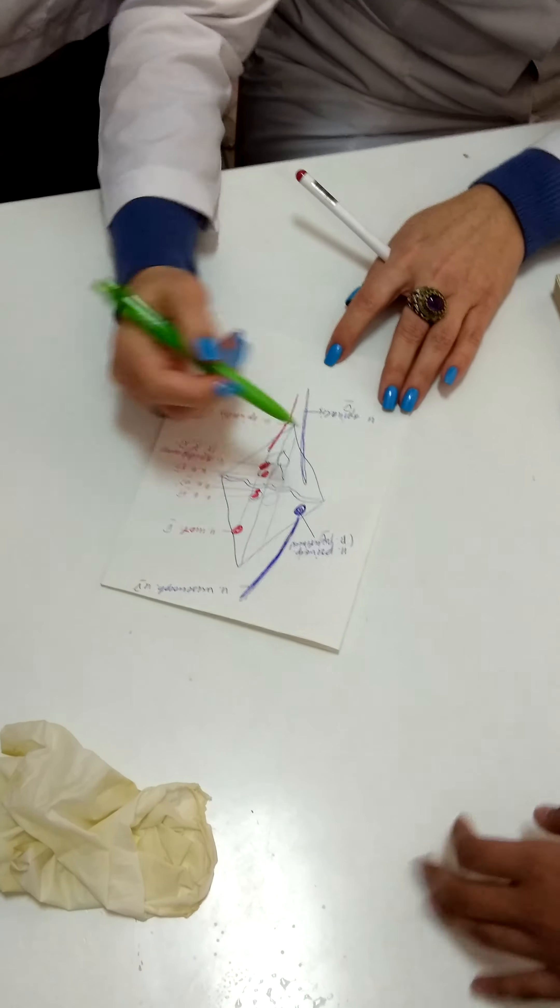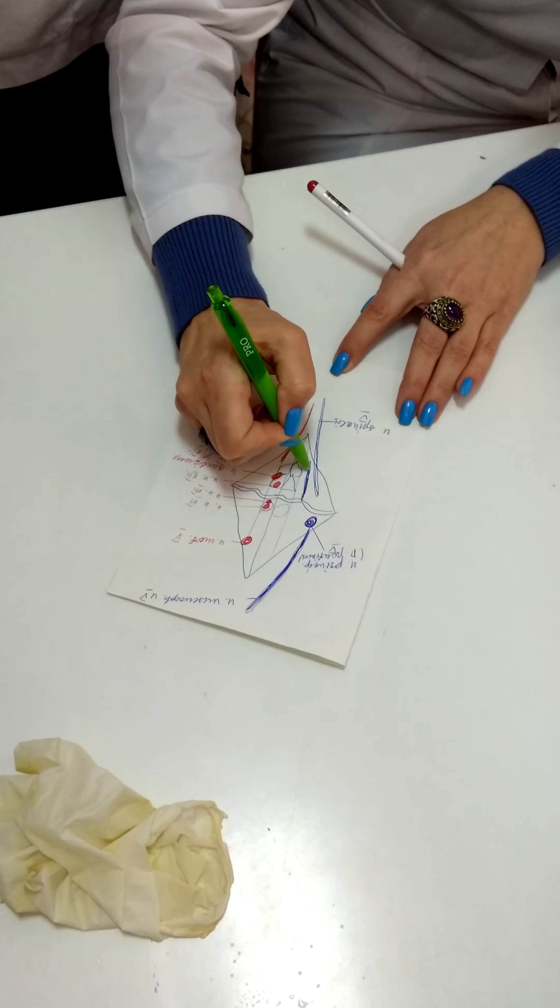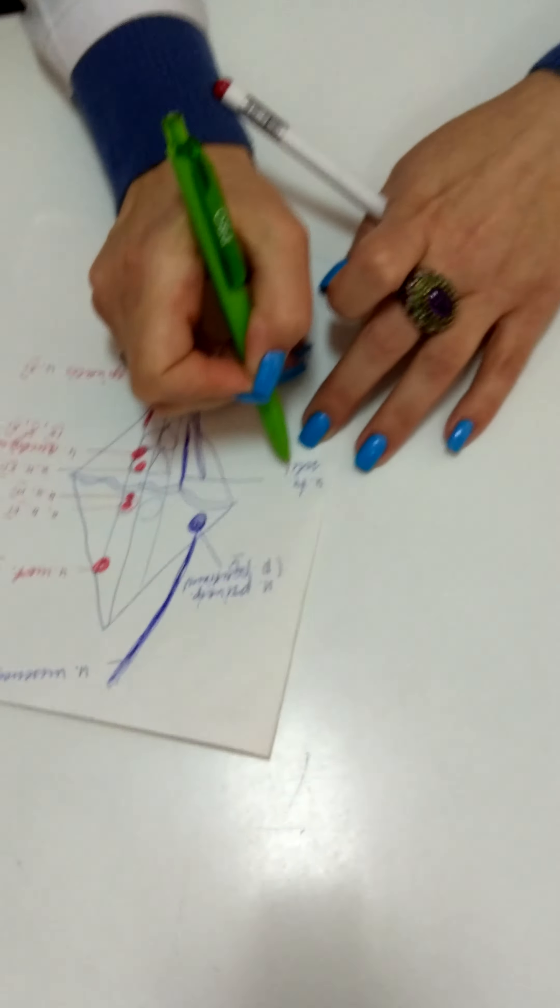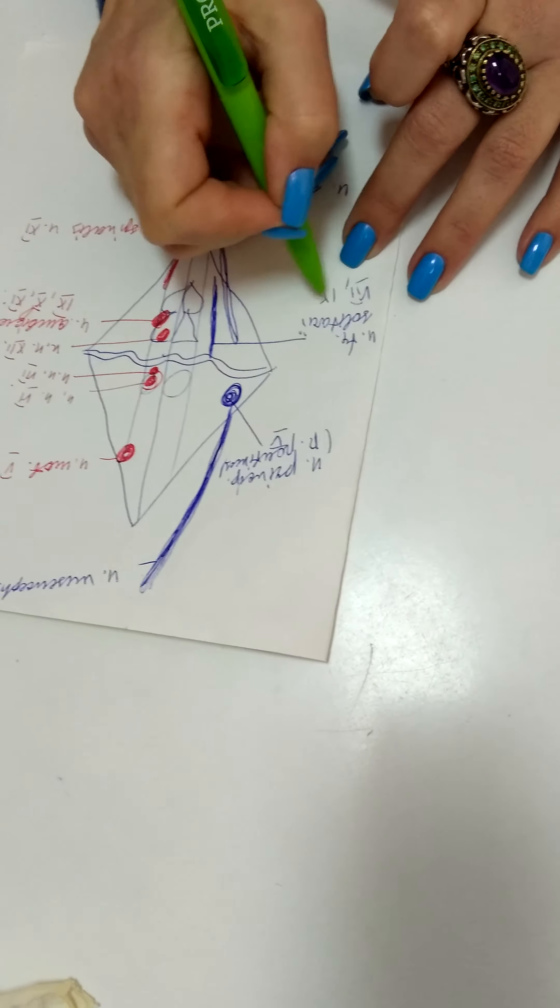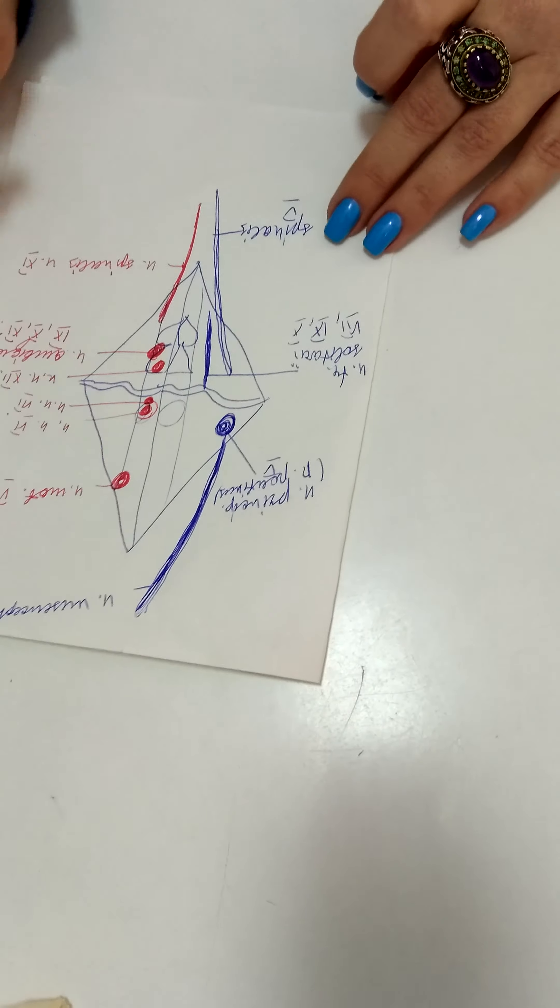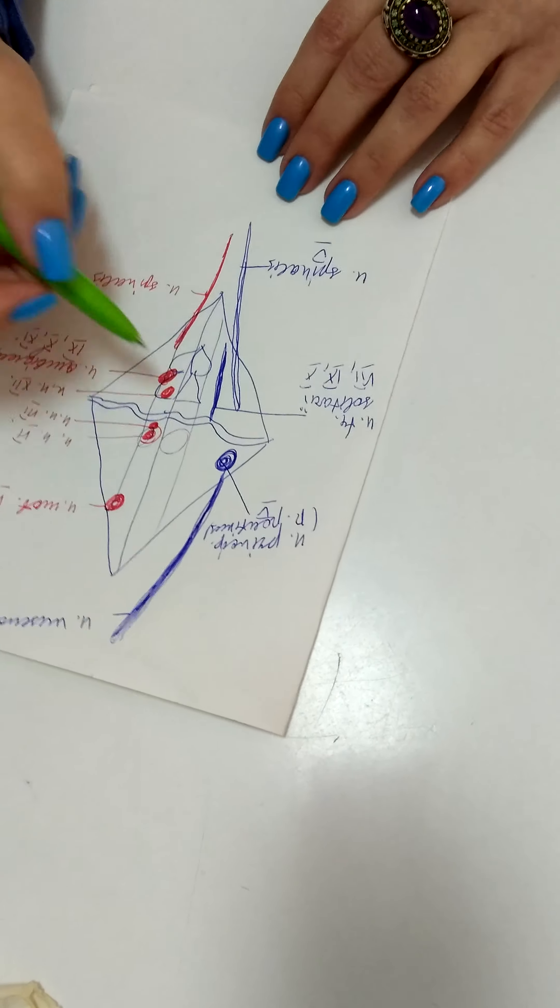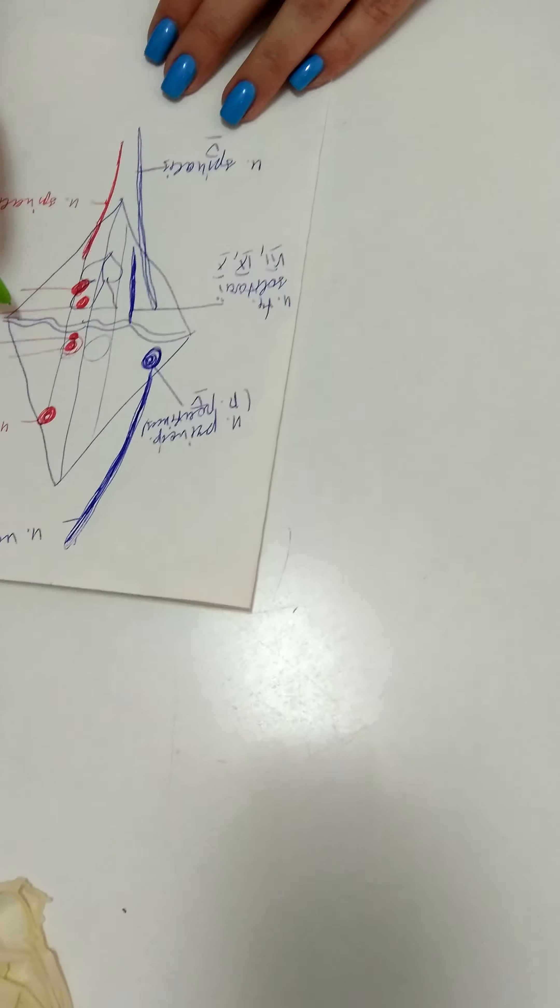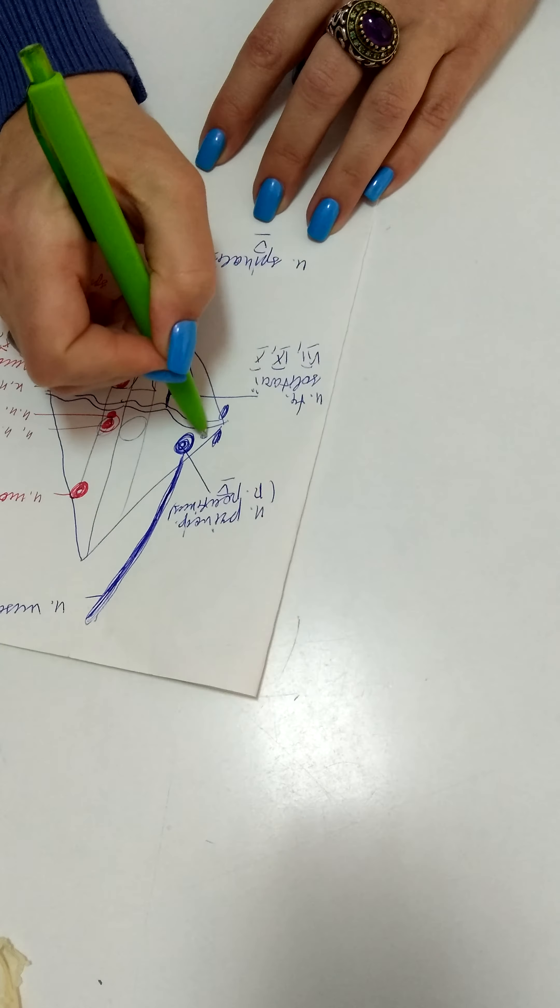One common nucleus locates in myelencephalon called nucleus tractus solitarii. It's common for seventh facial, ninth glossopharyngeal, and tenth vagus nerves. This is the nucleus of taste sensitivity. In the lateral portion of rhomboid fossa on both sides, nuclei of vestibulocochlear nerve are present.